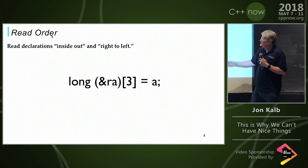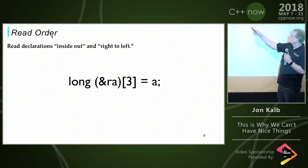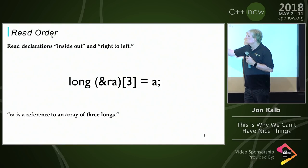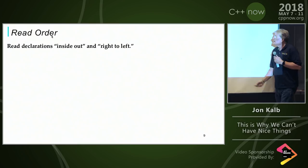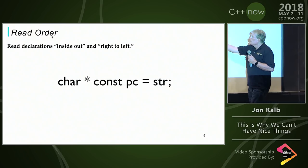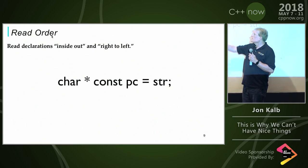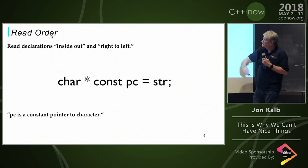So this is a reference to an array of three longs, again, reading inside out and right to left. And then this is PC is a constant pointer to char, reading again right to left.